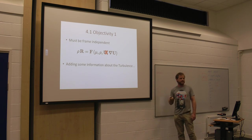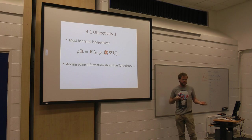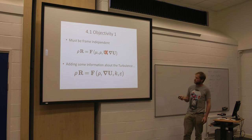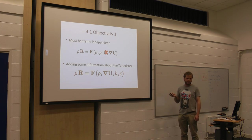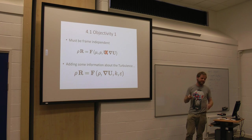Then we actually need to add some information about the turbulence because every turbulence is the same, so we need to say something about it. So we have to introduce a length scale and a time scale, and we can do that in various ways. One common way is to use the turbulent kinetic energy k and the dissipation epsilon. Don't worry about what they mean. It's not important.